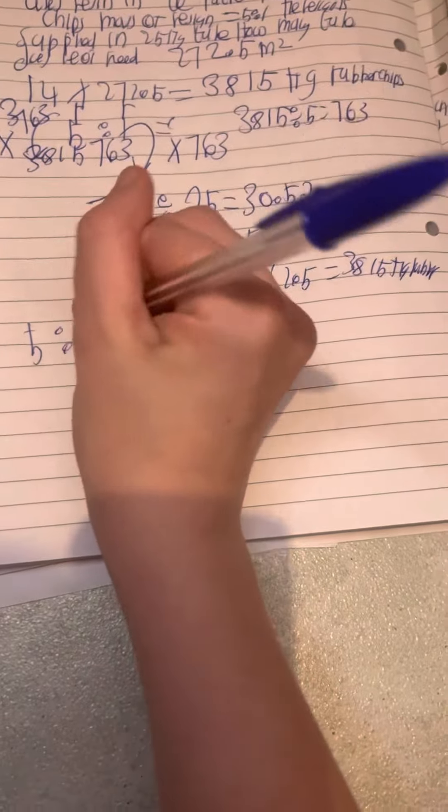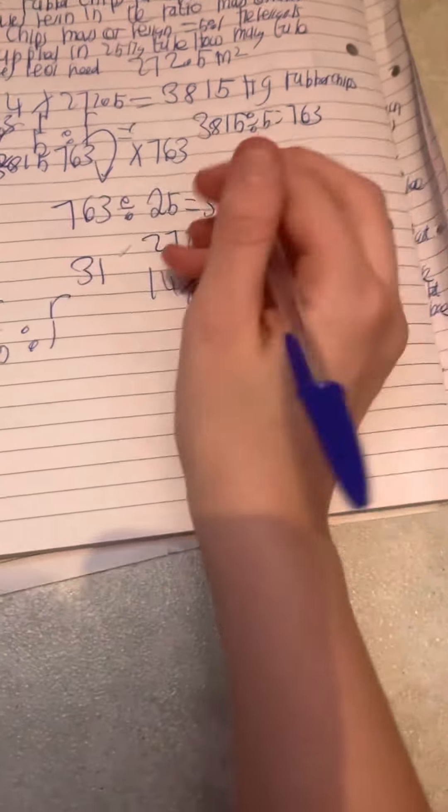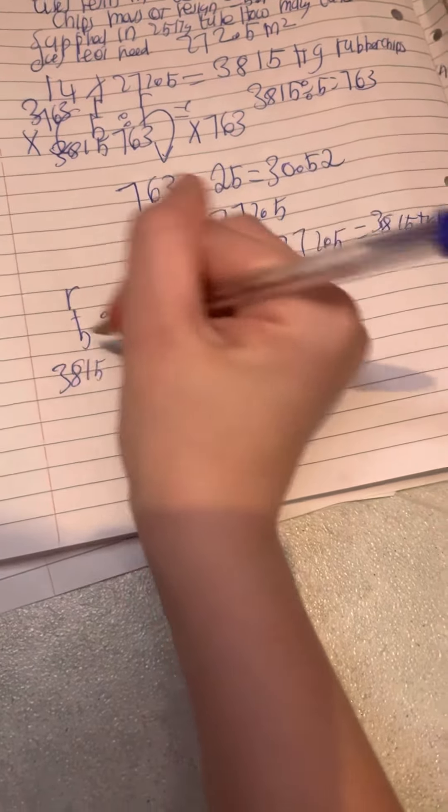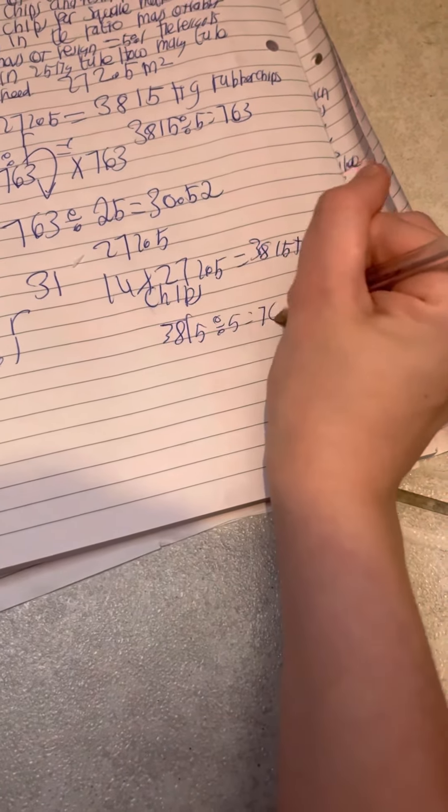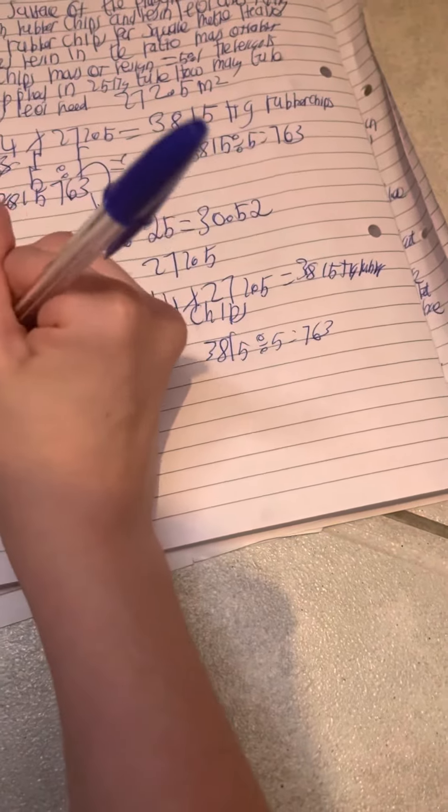So if we do the ratio, 5 here, we've got resin here and rubber chips there. So if we work this out, if we do 3815, what do we times that by? We do 3815 divided by 5, that will give us 763, times that by 1 to get 763.